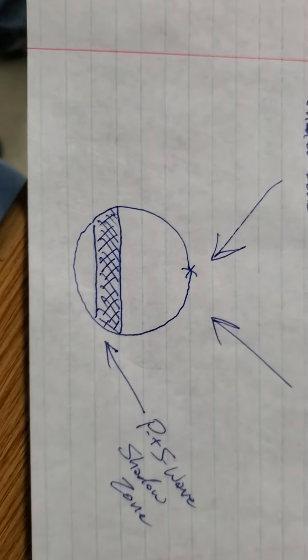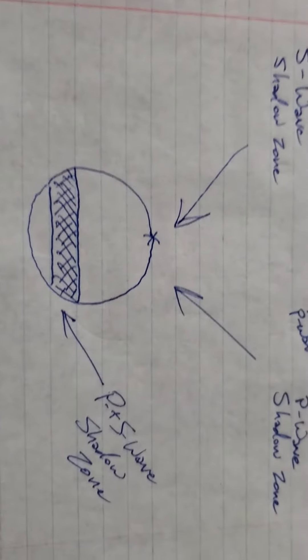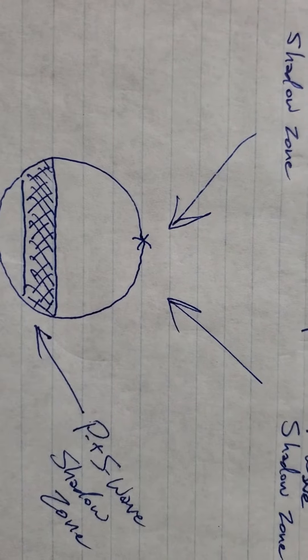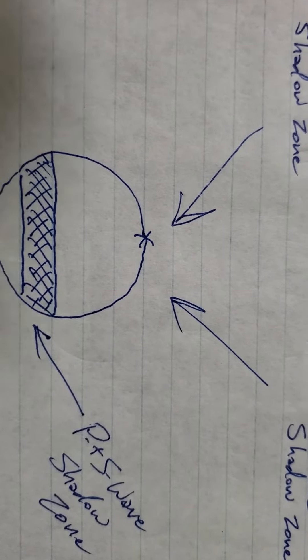Here's a diagram of it. A complete ring going all the way around the world on the opposite hemisphere from where the earthquake was.